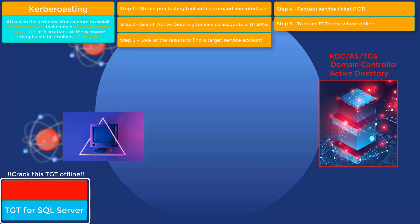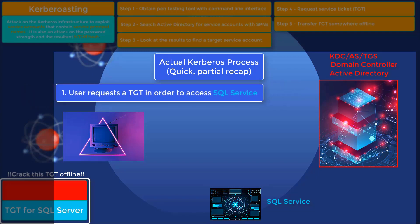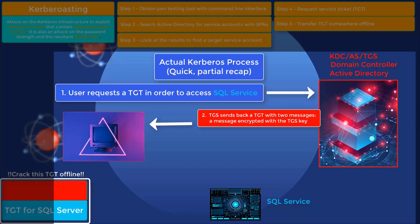Before going further, let's remind ourselves what happens in an actual Kerberos process. In Kerberos, when a user wants to access a service — like a printer, file server, or SQL server — it must first request a ticket from the KDC, which is the Authentication Service. The Authentication Service then provides the user with two messages: one containing information about the Ticket Granting Server so the SQL server can confirm the user is authenticated and that the KDC and user have a trust relationship, and the second message being the Ticket Granting Ticket to access the SQL server.